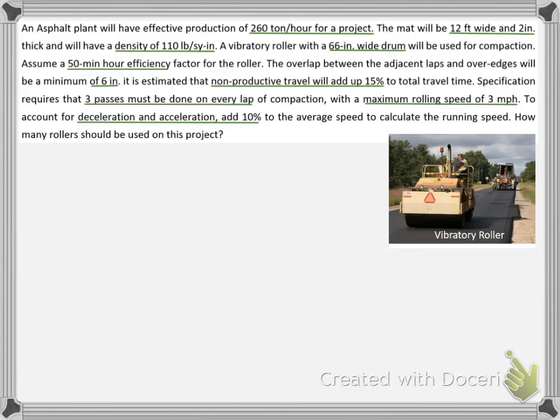The asphalt will be compacted by rollers with the shown efficiency and operational requirements. The roller cannot drive more than 3 miles per hour and its laps need to overlap and extend beyond the pavement edge by 6 inches. We will adjust the speed by 15% and 10% to account for non-productive and speeding times. With all these known values, we need to determine the number of rollers that should be used.